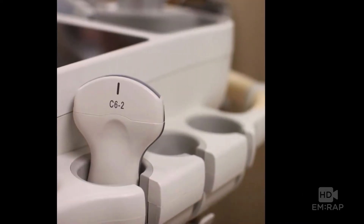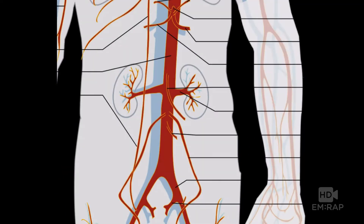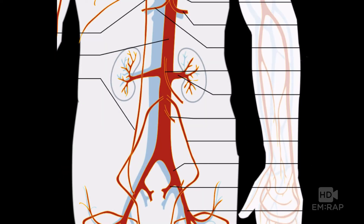The probe of choice you're going to be using is the curvilinear or the phased array transducer. The vast majority of AAAs are going to be infrarenal, and luckily for us, this is a pretty easy area to evaluate with ultrasound.